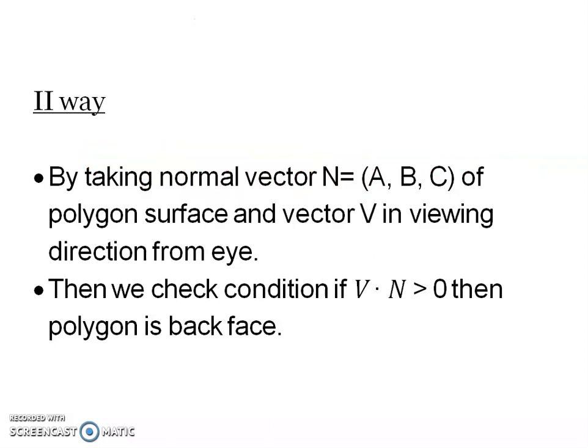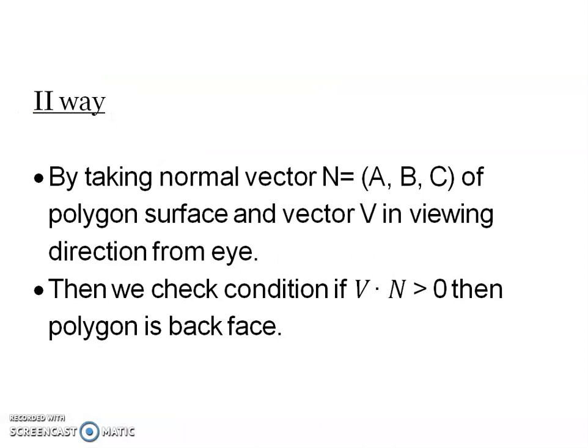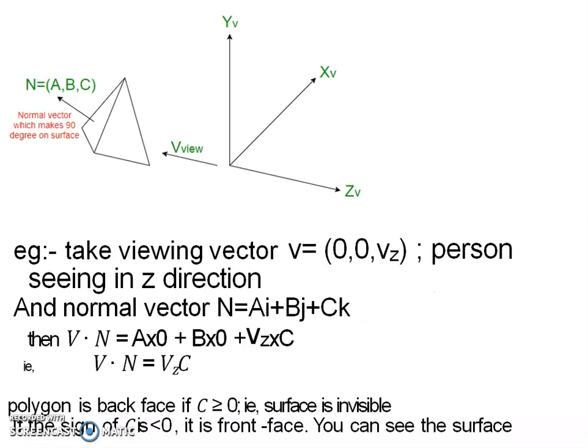The second way: if the surface is back face, then V dot N is greater than 0. Here, N is the normal vector of coordinate A, B, C, and V is the viewing vector, the viewing direction from the eye position. We multiply V into the normal vector and check whether it is greater than 0.